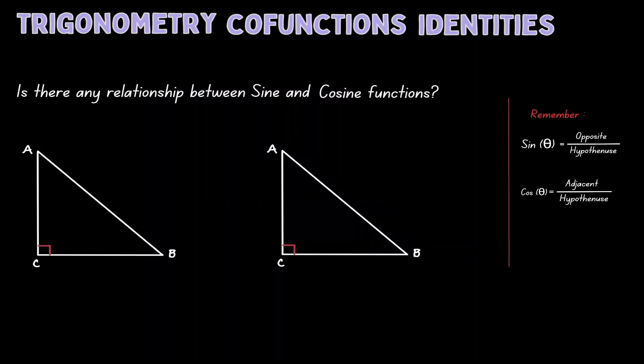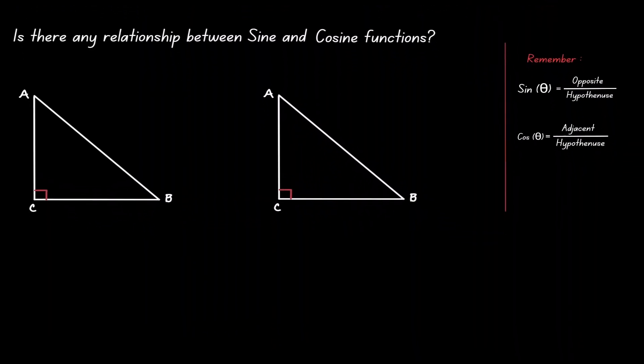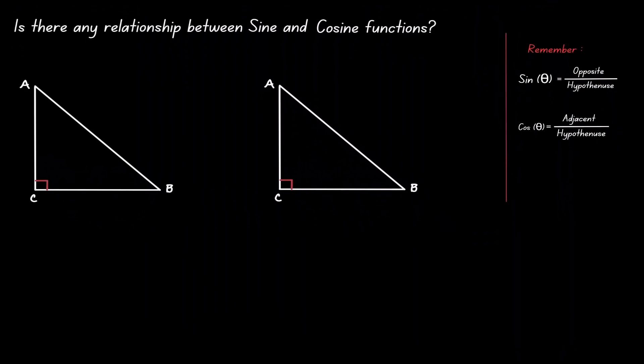Let's discuss trig co-function identities. We want to identify if there's any relationship between the sine and the cosine function.